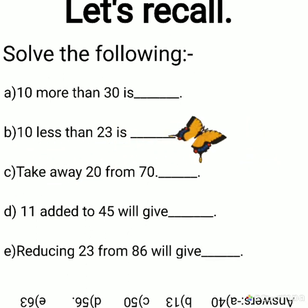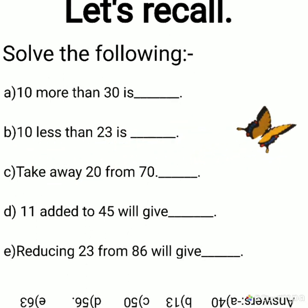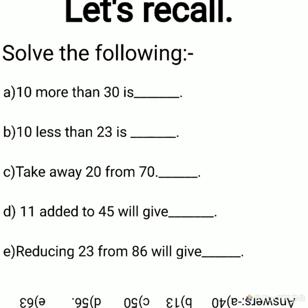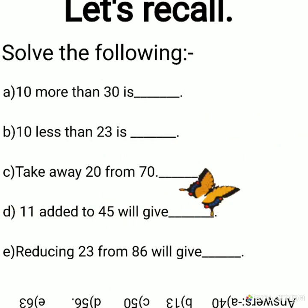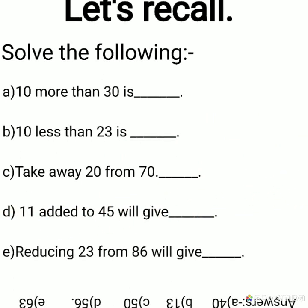C: Take away 20 from 70. Take away means subtract. So 70 minus 20 will give you which number? Yes, 50.